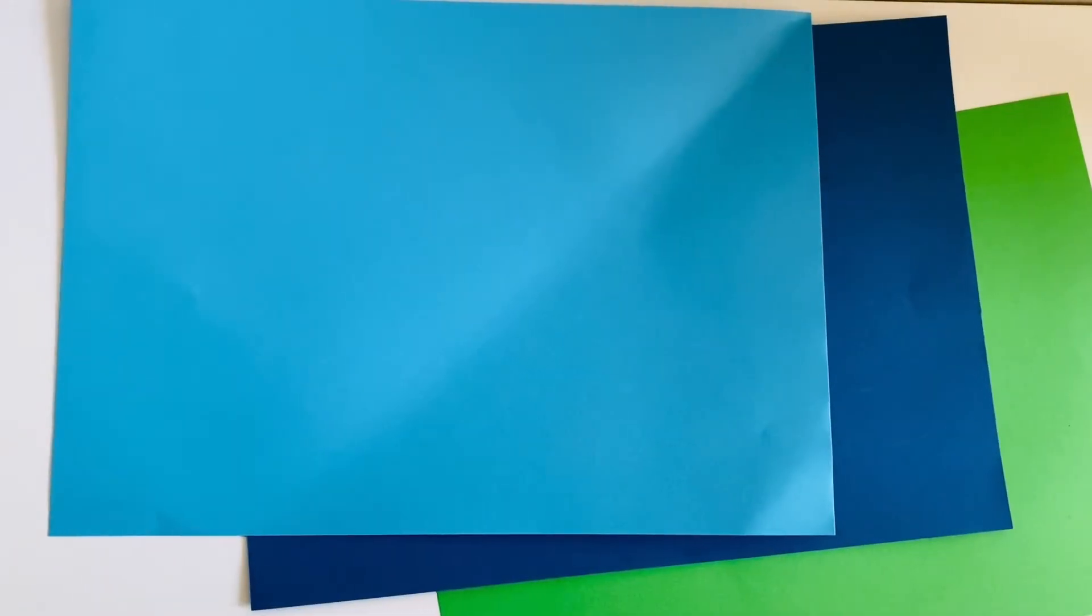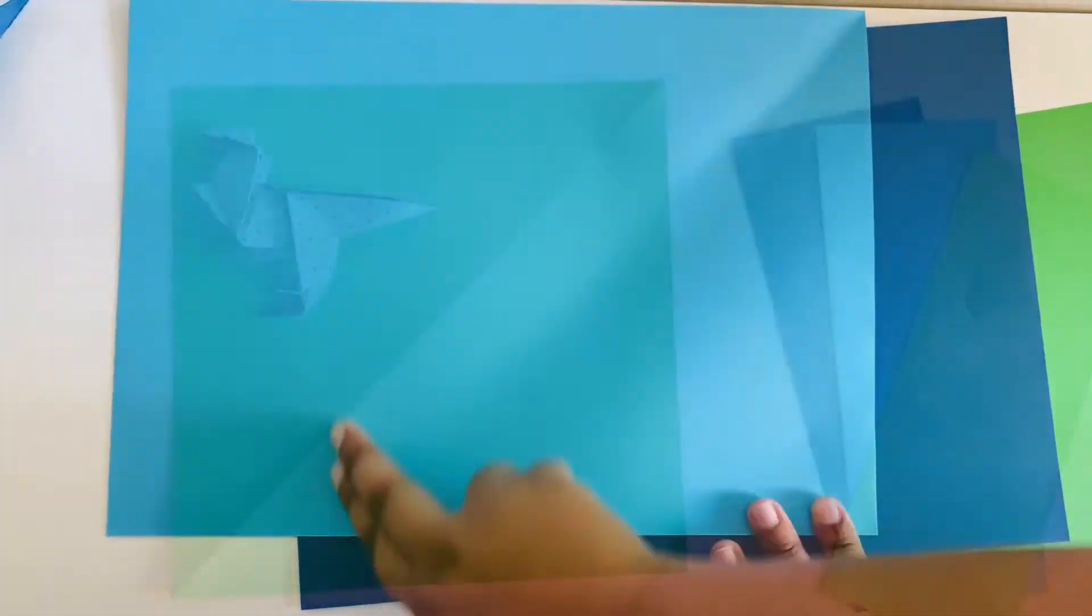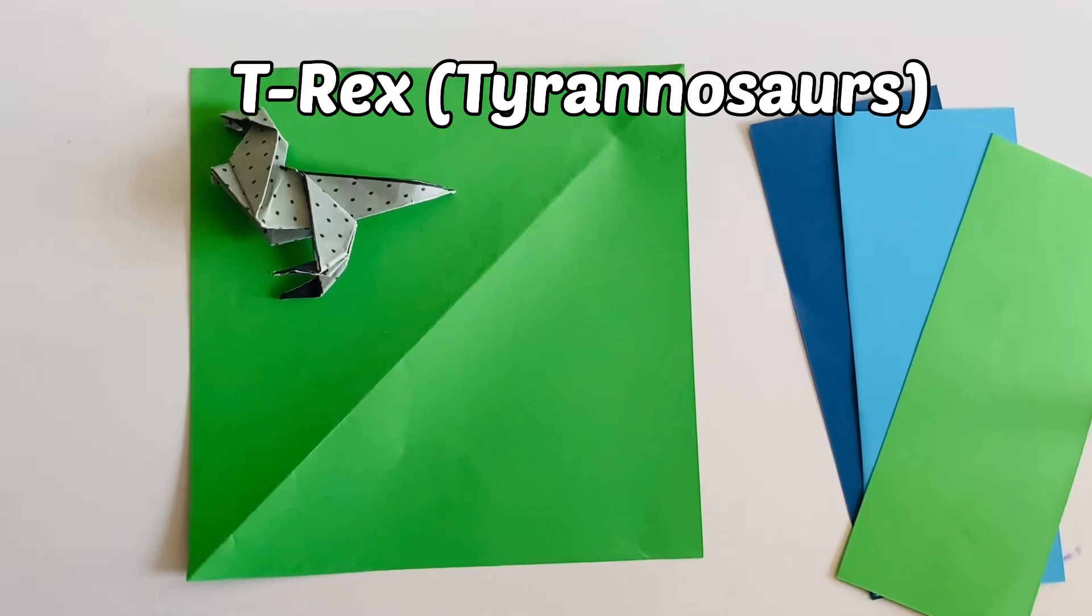To make the dinosaurs you will need a few A4 sized papers and then directly turn them into a square. First of all I am going to be making a T-Rex.